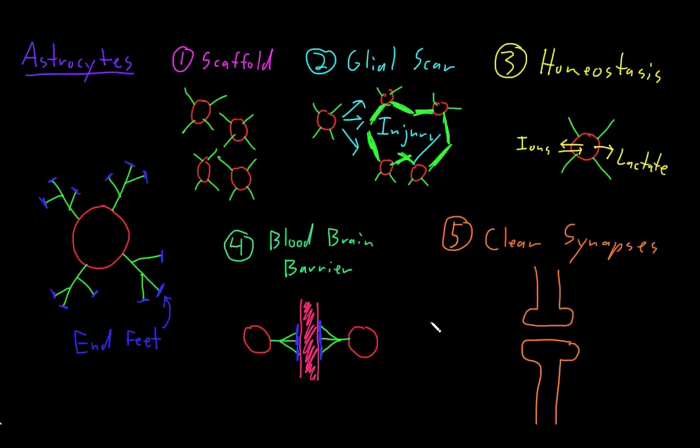Just like the astrocytes are using their end feet to surround the blood vessels that pass through the central nervous system, the astrocytes are also extending their processes and placing their end feet all over synapses, so that the end feet are plastered all over these synapses, and they're actually helping to clear out those synapses.